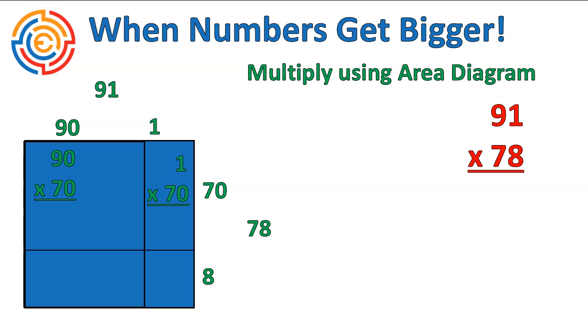Each box is going to be filled in with the area for each. 90 times 70, 1 times 70, 90 times 8, and 1 times 8. And then I can solve for those pieces.